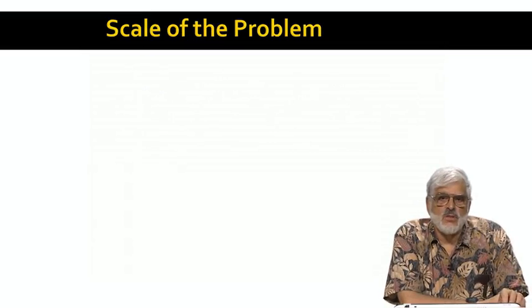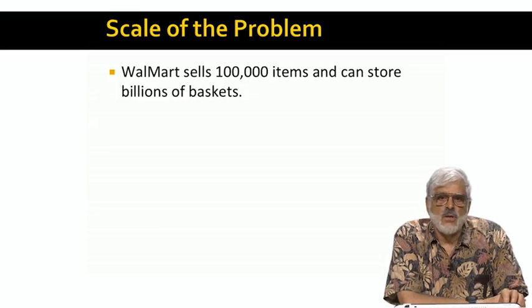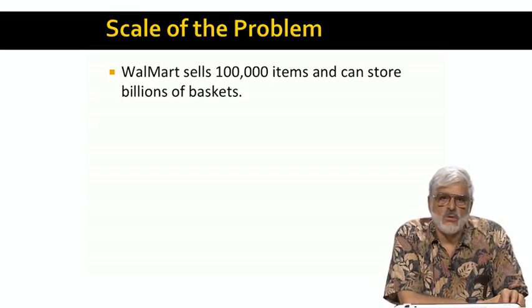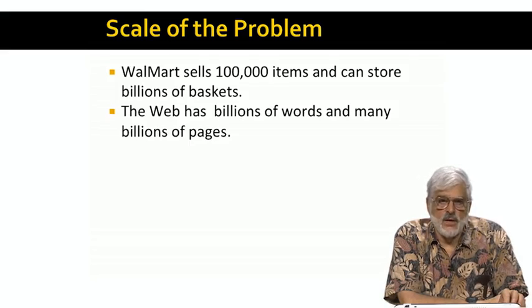Anyway, just to remind you of the scale of the sort of problem we're thinking about. If we're dealing with real market baskets, a big store like Walmart will sell 100,000 different items and stores billions of baskets in its database for analysis. On the other hand, the web has billions of different words, most of them, by the way, are misspellings, and many billions of pages.